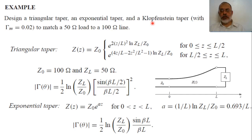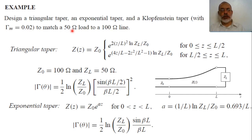In this video, we are going to present an example for designing taper sections to match a specific load impedance to a transmission line with a specific characteristic impedance Z-naught. It is required to design a triangular taper section, an exponential taper section, and a Klopfenstein taper section. The Klopfenstein taper section is characterized by gamma maximum equals 0.02. We need to match a 50 ohm load to a 100 ohm line, so Z-load equals 50 ohms and Z-naught equals 100 ohms.